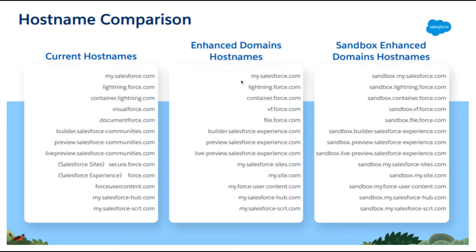Current hostnames: my.salesforce.com. Enhanced domain hostname is the same but with My Domain, you add 'sandbox' here. lightning.force.com becomes sandbox.lightning.force.com. So you add 'sandbox' to the URL. You can also see document.force.com gets sandbox added for the sandbox enhanced domain hostname.